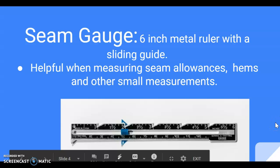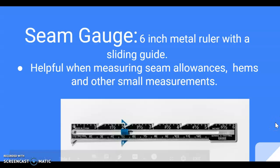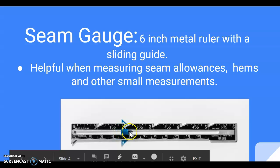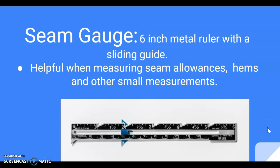We also have a seam gauge that we'll use — a small ruler that has a slide on it. You can set it for whatever amount you need to measure, and it makes it a lot faster if you're measuring, say, all the way around the waistband. It's just a lot quicker if you can set it at the correct measurement that you need.